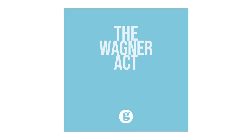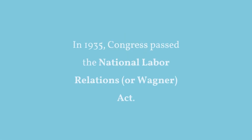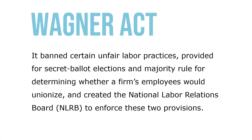Let's take a look at the Wagner Act. In 1935, Congress passed the National Labor Relations, or Wagner Act. It banned certain unfair labor practices, provided for secret ballot elections and majority rule for determining whether a firm's employees would unionize, and created the National Labor Relations Board, known as the NLRB, to enforce these two provisions.